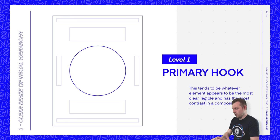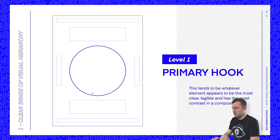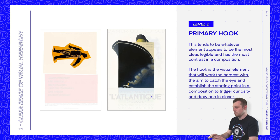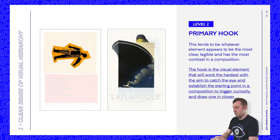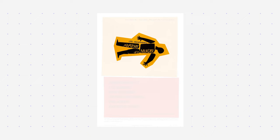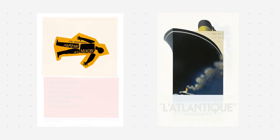The first level is the primary hook. This tends to be whatever element appears to be the most clear, legible, and has the most contrast in a composition. The primary hook is the visual element that will work the hardest, with the aim to catch the eye and establish the starting point in a composition to trigger curiosity and draw one in closer. In these examples, it's the large visual image in each poster that works as the primary hook — in the first poster, the large illustration at the top, and in the second, the ship illustration large in comparison with its surrounding elements.